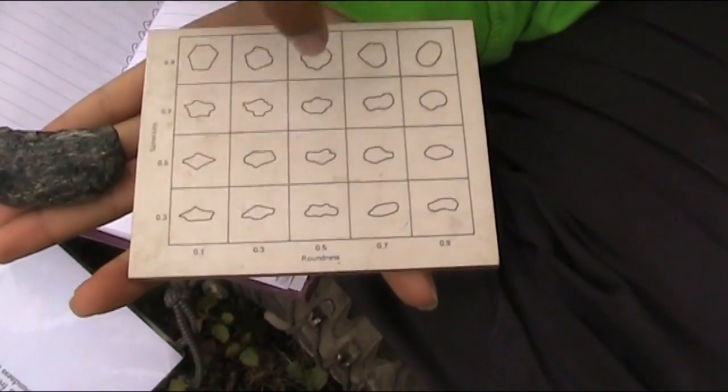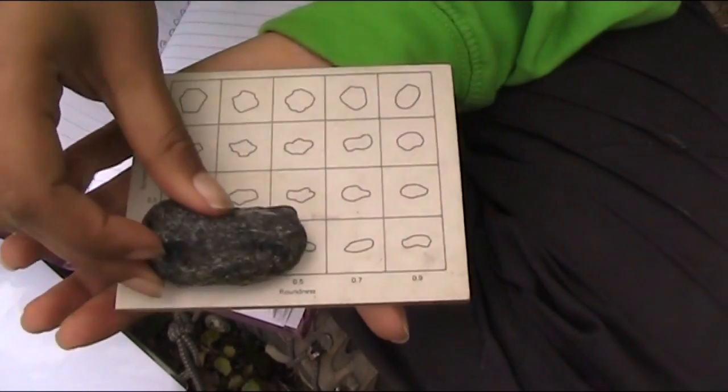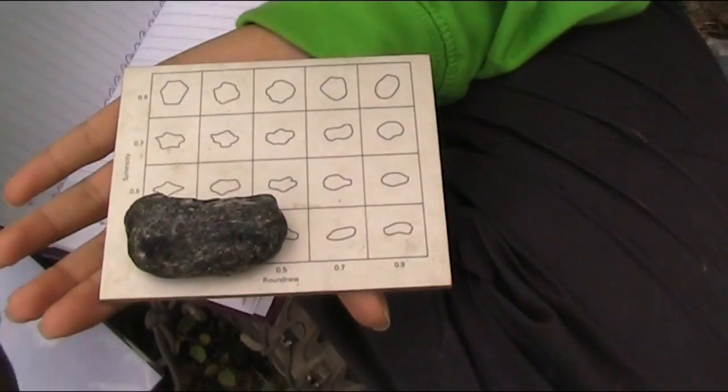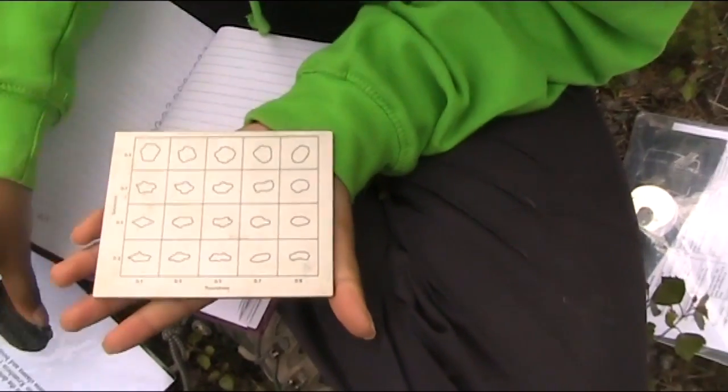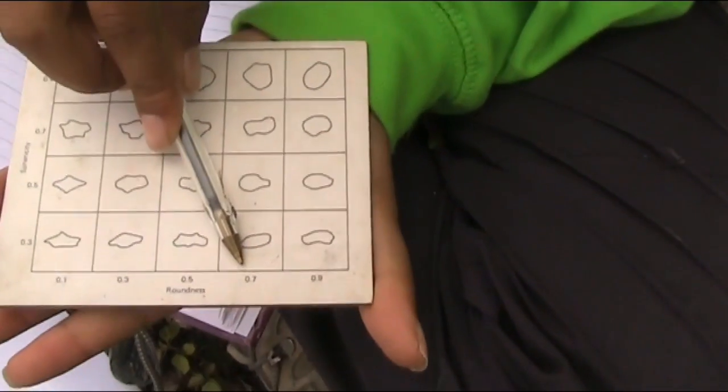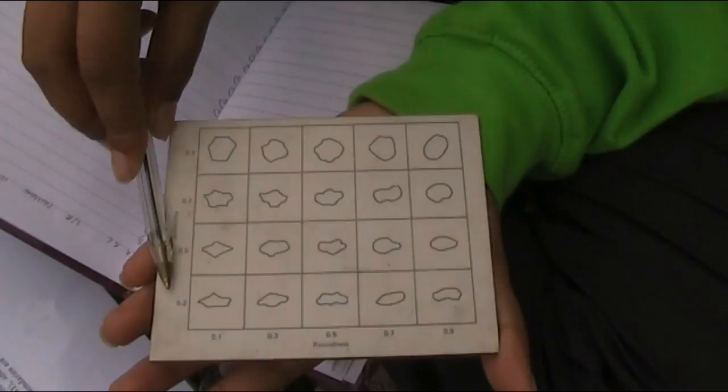So on the 0.7 roundness with a 0.3, if I just put it on next to it so you can see they look very similar. So that leaves the roundness as being 0.7. You've got along the corridor 0.7 and up the stairs 0.3.